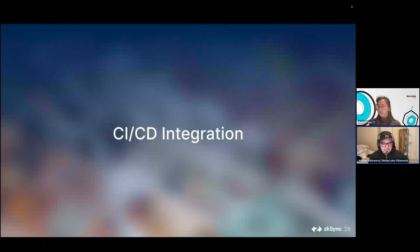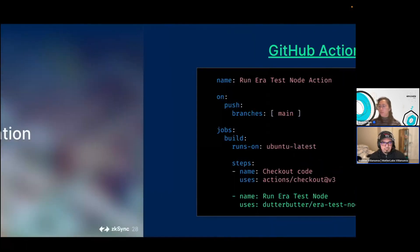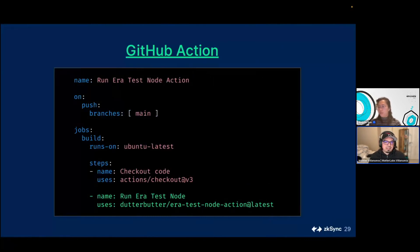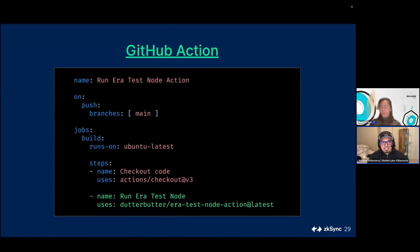We just released a GitHub Action to make this simple. Here's an example GitHub workflow where the job is called 'build' and has a single step highlighted in green called 'Run era test node' — all you have to do is pass that in, and in the next step just say yarn test or run your tests however you want. The node will be running on localhost port 8011, just like locally. We've started adding this to our in-house tools — it's just two lines away from having a local node, without waiting on a full Docker setup.